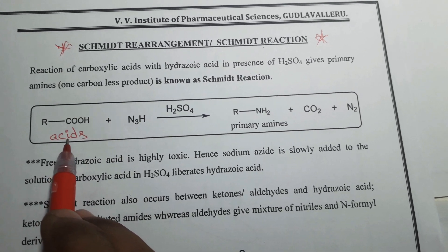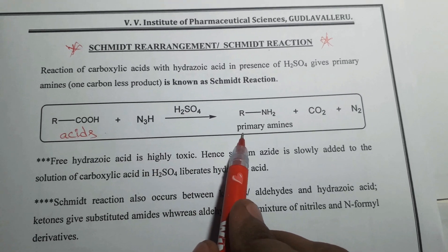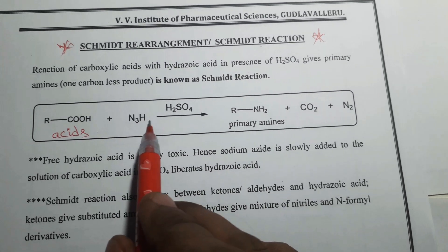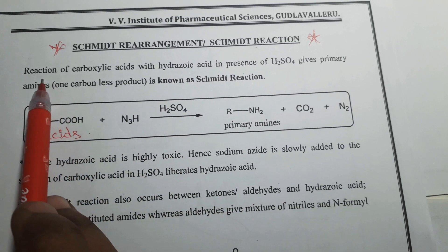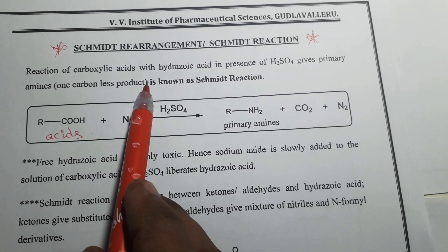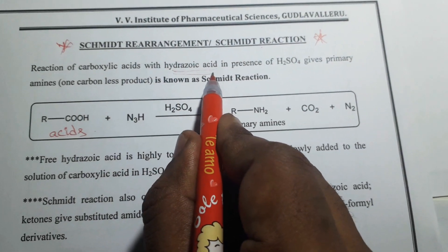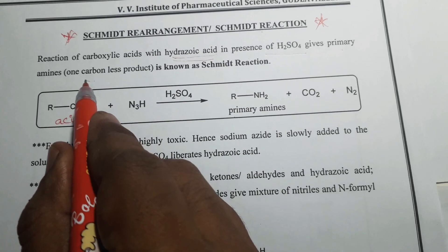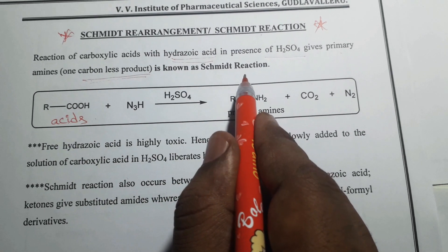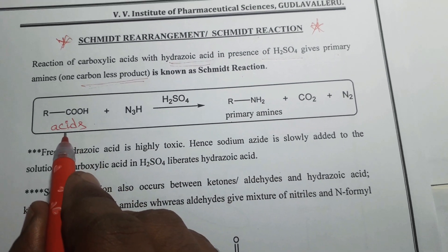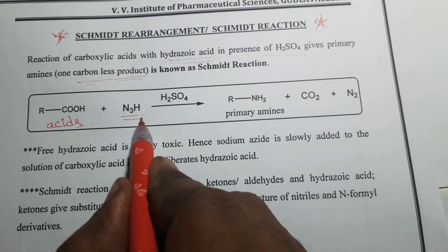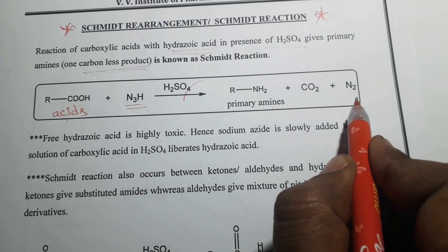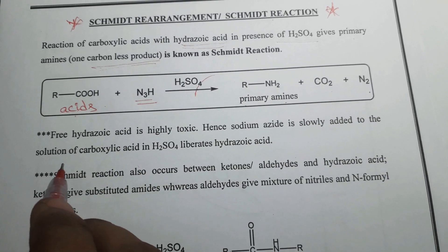According to the Schmidt reaction, carboxylic acids are converted into primary amines in the presence of hydrozoic acid and sulfuric acid. The reaction of carboxylic acids with hydrozoic acid in presence of sulfuric acid gives primary amines — that means a one-carbon-less product. This is a general reaction: carboxylic acids react with hydrozoic acid in presence of sulfuric acid to give primary amines by the loss of carbon dioxide and nitrogen.